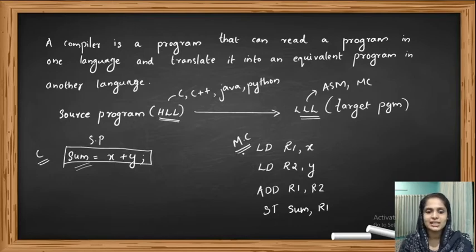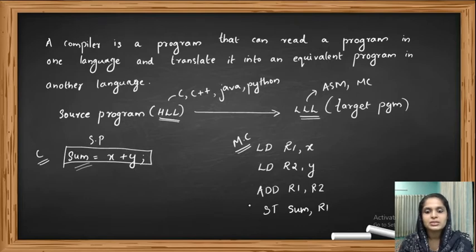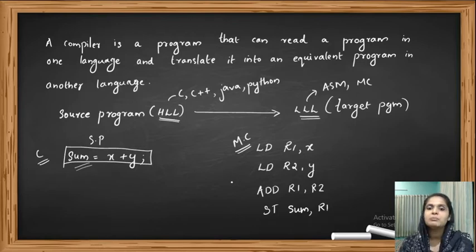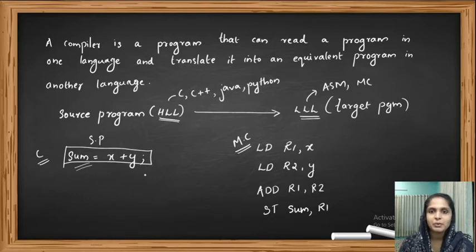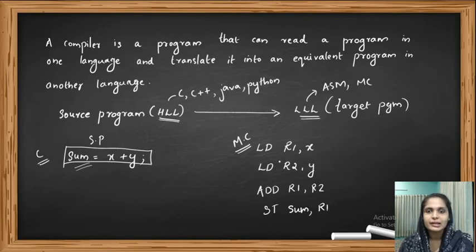So from this example you can see that in order to write the single statement sum = x + y in machine code, you have to use four instructions. This shows how difficult it is to write a complete program in machine code, and that's why we use high level languages. With the help of a translator such as a compiler, we translate the high level language to low level language so the machine can understand it.